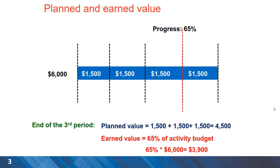In this example you can see that the plan is to spend three quarters, or 75 percent, of the funds by the end of the third period. The actual progress however is only 65 percent, and by multiplying this by the six thousand dollar total budget for the activity, the earned value will be less than the planned value.